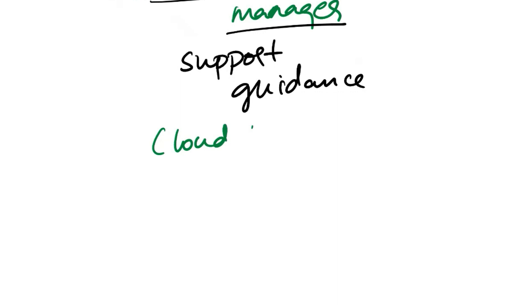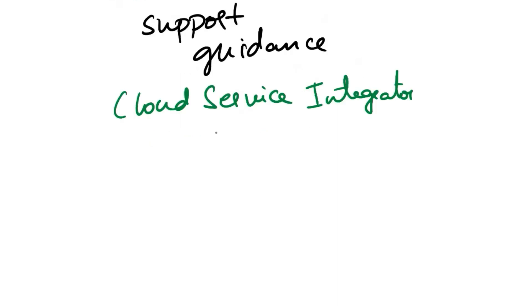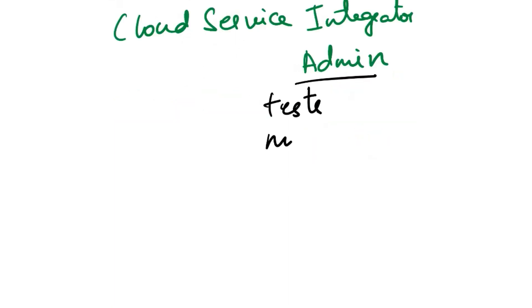Next role is cloud service integrator. The integrator connects and integrates existing services and apps with cloud-based services. Next role is cloud service admin. The admin tests, monitors, and secures cloud services. The admin also provides usage reporting and deals with service problems.